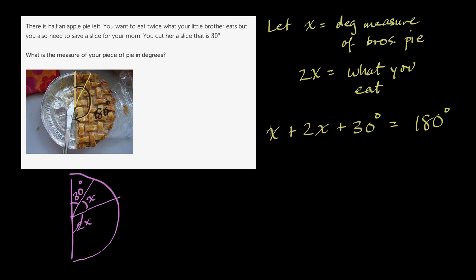Now, we can simplify this. If we have one of something and then have another two of it, how much do we have now? Well, I now have 3x's. So 1x plus 2x's is going to be 3x's. So I have 3x plus 30 degrees is going to be equal to, of course, 180 degrees.